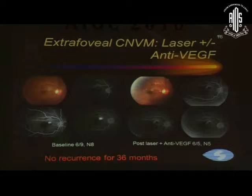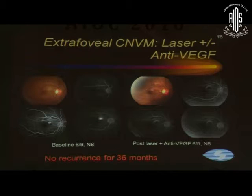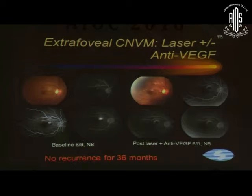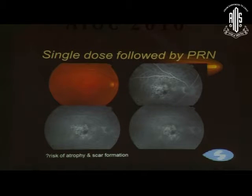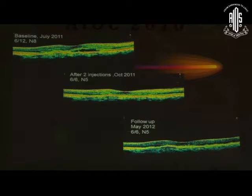Here is an extrafoveal CNVM which could be treated with laser and anti-VEGF; if you are fortunate to have such a membrane, the patient may be stable virtually for the rest of his life. This next case was an occult CNVM where a single dose of anti-VEGF was given following the PRN regime. Certain features suggested a risk of geographic atrophy, so we wanted to avoid too many injections, and the patient remained stable after just one injection.